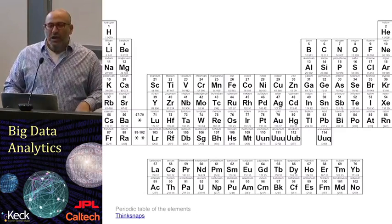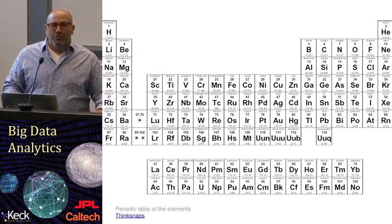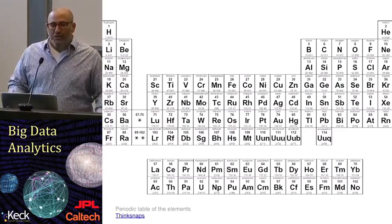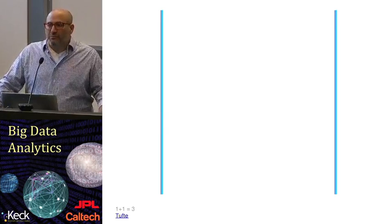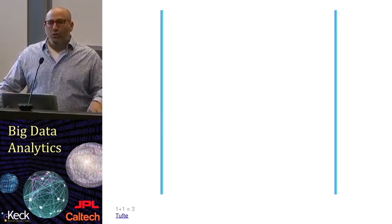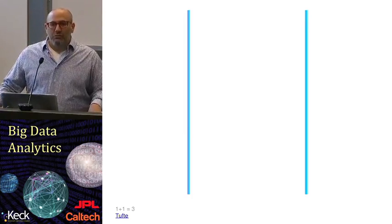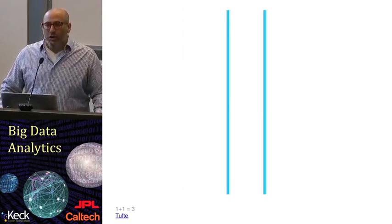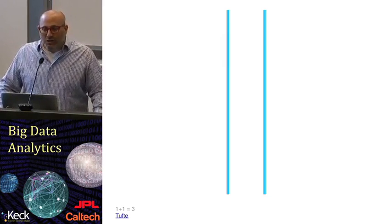There's one additional principle that is very often overlooked in scientific visualization. Tufte calls this idea 1 plus 1 equals 3. Look at the screen and tell me what you see — most people would say they see two lines. Now, most people consistently say they see two lines. But with one more change, most people will say they see two lines and a space. It's very much like the two lines now create a road through the graphic.